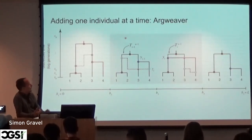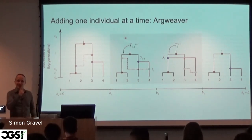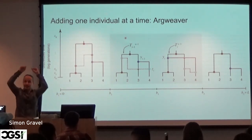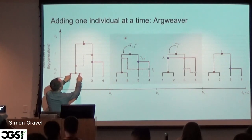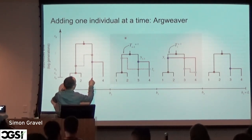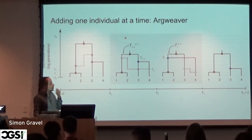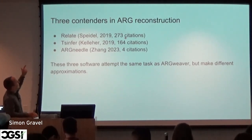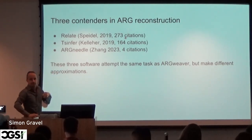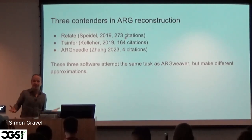People have followed up on that. One nice paper was Argweaver (2014), which expanded this to more than one individual — instead of just finding the time to the most recent common ancestor for one individual, you try to learn the tree describing relationships among all individuals, adding one individual at a time using hidden Markov models. Argweaver works for up to about 10 individuals. More recent methods — Relate by Lewis Peedle, TS Infer by Jerome Kenecher, and Argneedle by Zhang et al. — are all trying to solve this problem and are able to do it for hundreds of thousands of people.